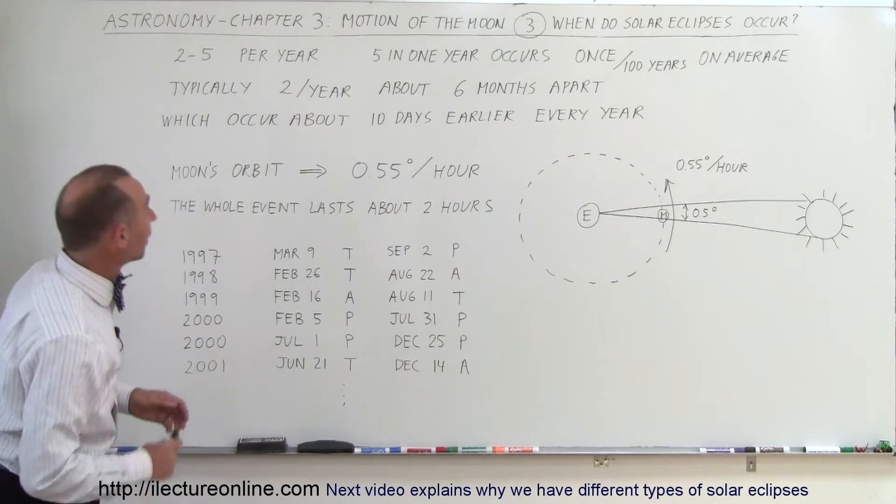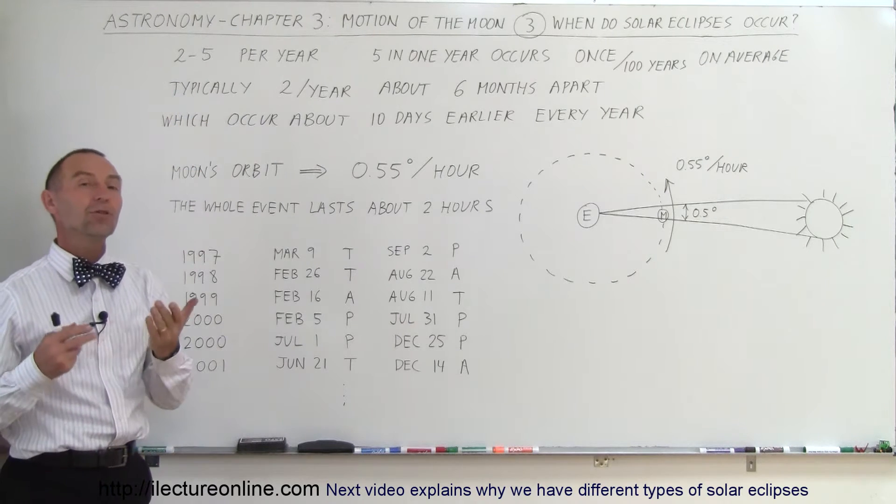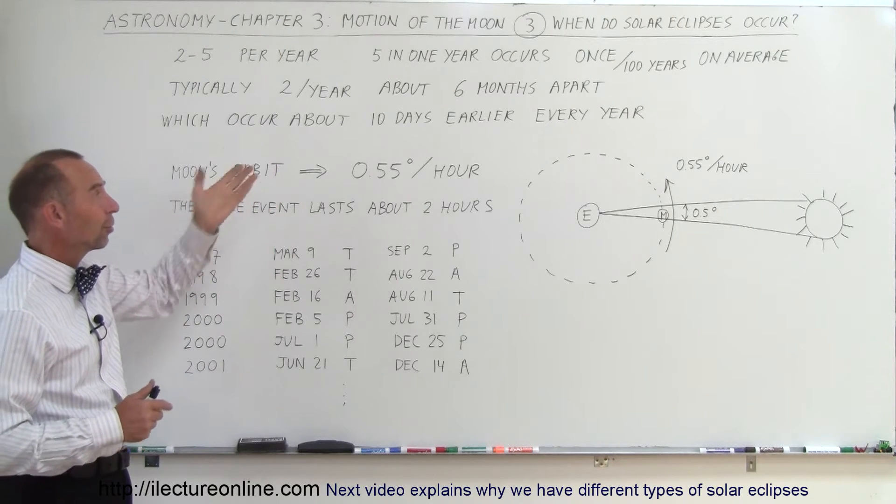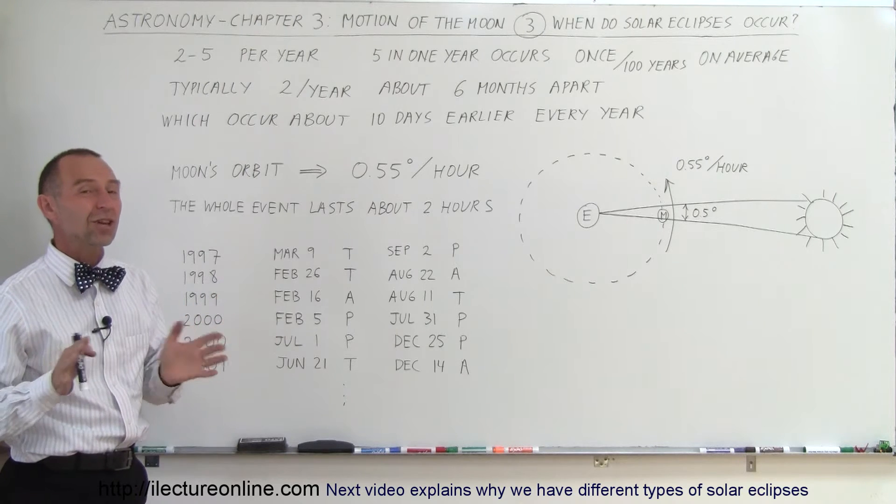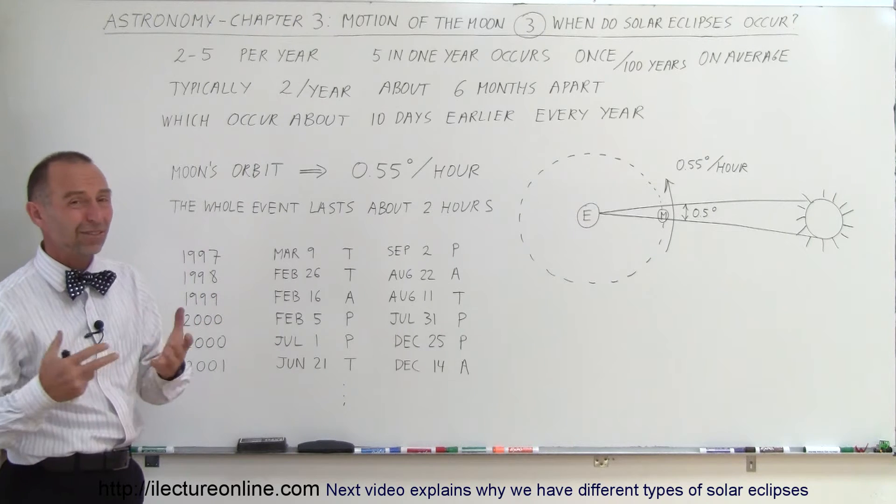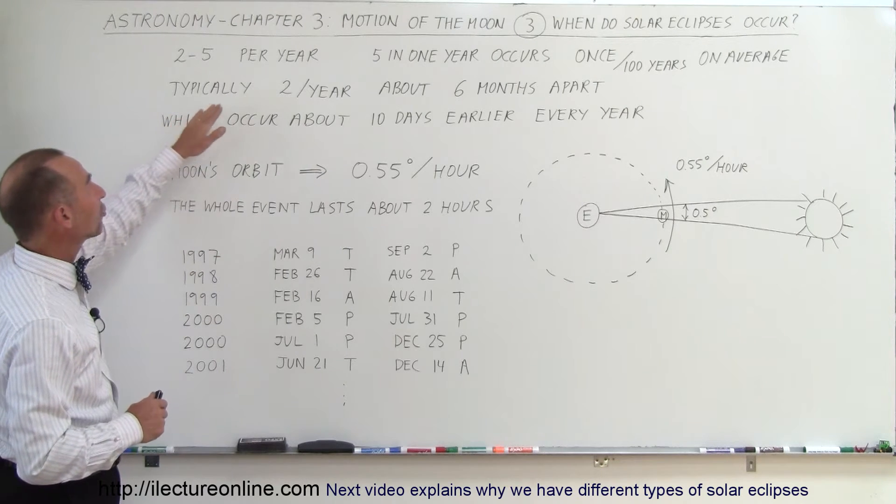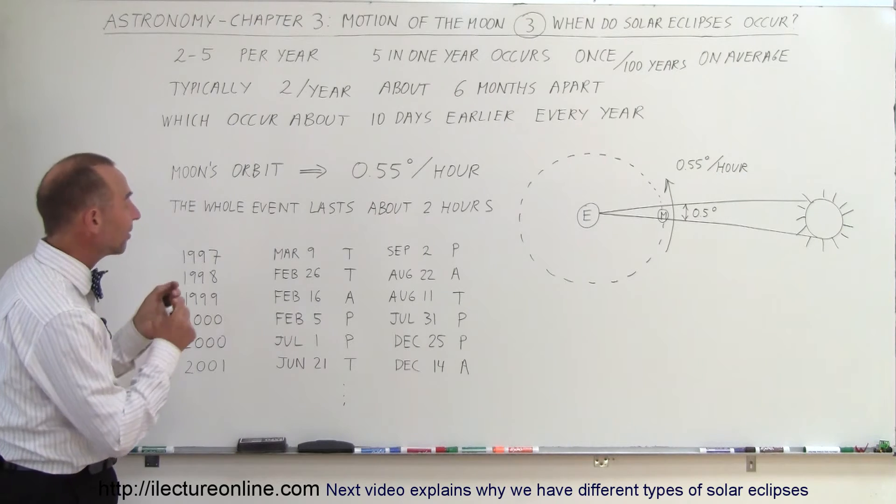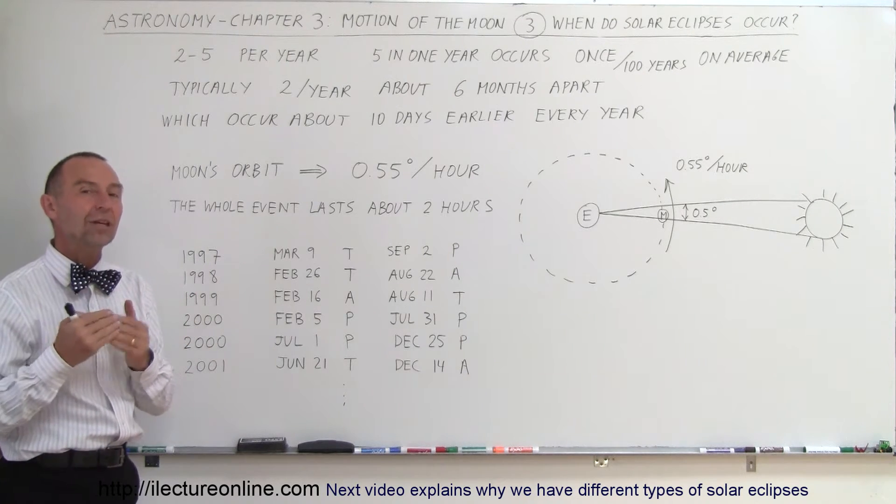Two times per year is typical, but it has happened as much as five times per year, but that is a very rare occurrence. Five solar eclipses in a single year occur typically only about once every hundred years, and that's a very approximate number. But typically, it's twice per year, about six months apart, and this reoccurrence changes about ten days every year.